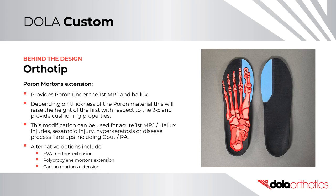Ortho Tip – A Poron Morton's extension provides Poron under the first MPJ and hallux. Depending on thickness, it raises the height of the first with respect to the second to fifth and provides cushioning. This modification can be used for acute first MPJ or hallux injuries, sesamoid injuries, hyperkeratosis, or disease process flare-ups like gout or RA. Alternatives include an EVA Morton's extension, polypropylene Morton's extension, or carbon Morton's extension.